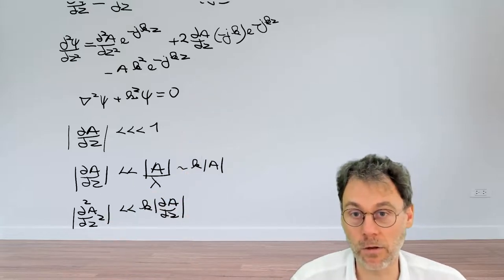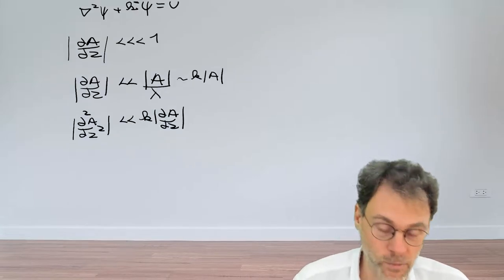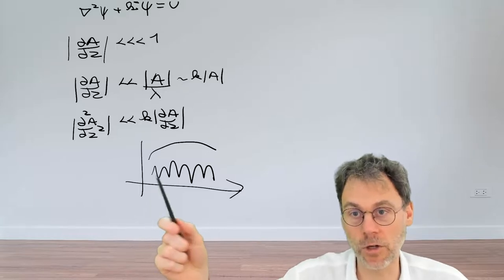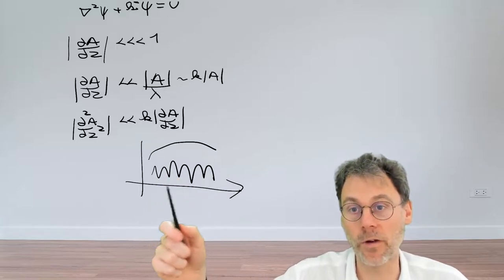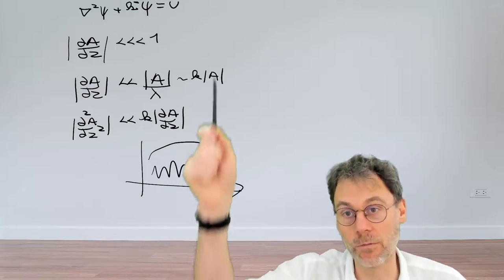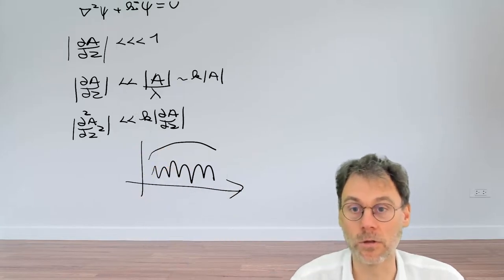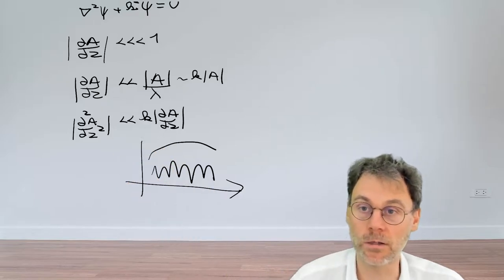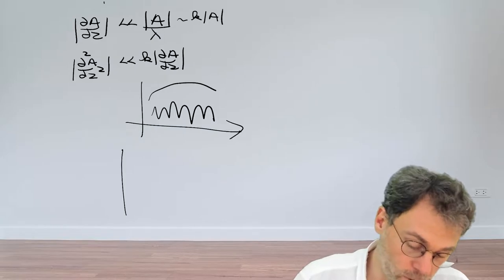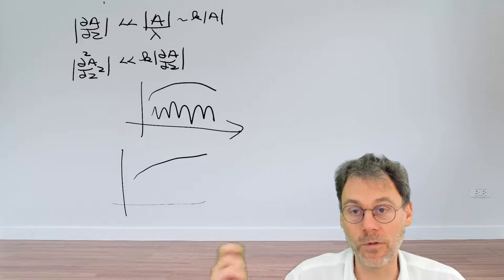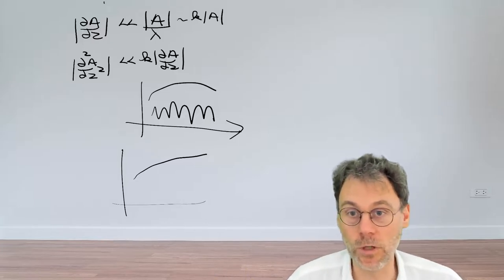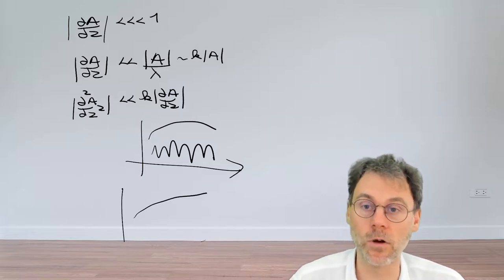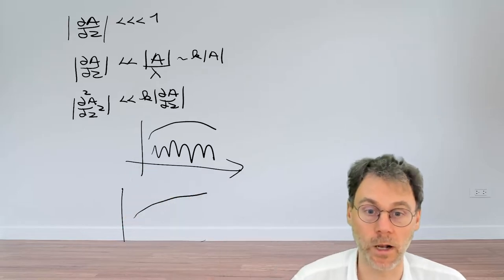The question is: can we take an inequality and differentiate it and still have a valid inequality? In general, obviously we can't — a small function could have a rapidly varying derivative that becomes large. However, here we don't have two independent functions; we have functions related by a derivative. Moreover, this function A is an extremely boring, slowly varying function. If it's such a boring function, that means the derivative is small, and if you take more and more derivatives, the contributions become smaller and smaller. So in our case, simply because A is such a boring function — and that's exactly the crux of the slowly varying envelope approximation — it's okay to neglect the second-order derivative.